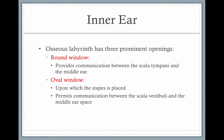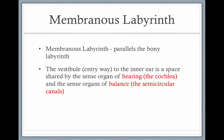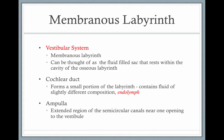The round window provides communication between the scala tympani and the middle ear. The oval window is where the stapes is placed, and it permits communication between the scala vestibuli and the middle ear space. Perilymph is the fluid that fills the scala vestibuli and the scala tympani. The membranous labyrinth parallels the bony labyrinth, and the vestibule — the entryway to the inner ear — is the space shared by the sensory organs of hearing, called the cochlea, and balance, the semicircular canals. The vestibular system is a membranous labyrinth filled with endolymph.